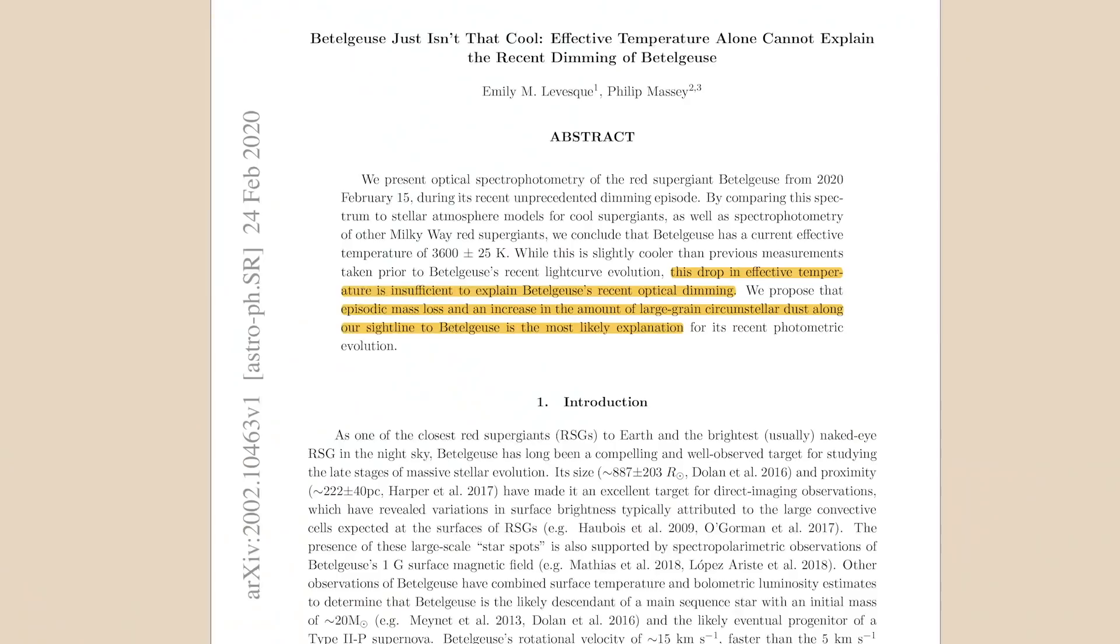Then again, star spots would have to be really large and really cool to cause the Great Dimming. That's not impossible, but observations by Emily Levesque show that Betelgeuse didn't really cool down very much in February. Which brings us back to dust. If all this sounds confusing to you, you're in good company because Betelgeuse is bothering a lot of us. And it may not be done messing with our heads.